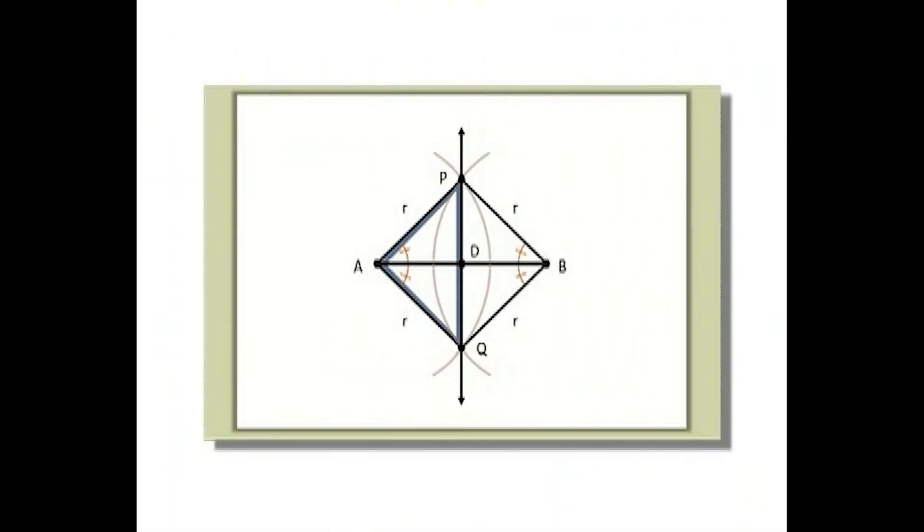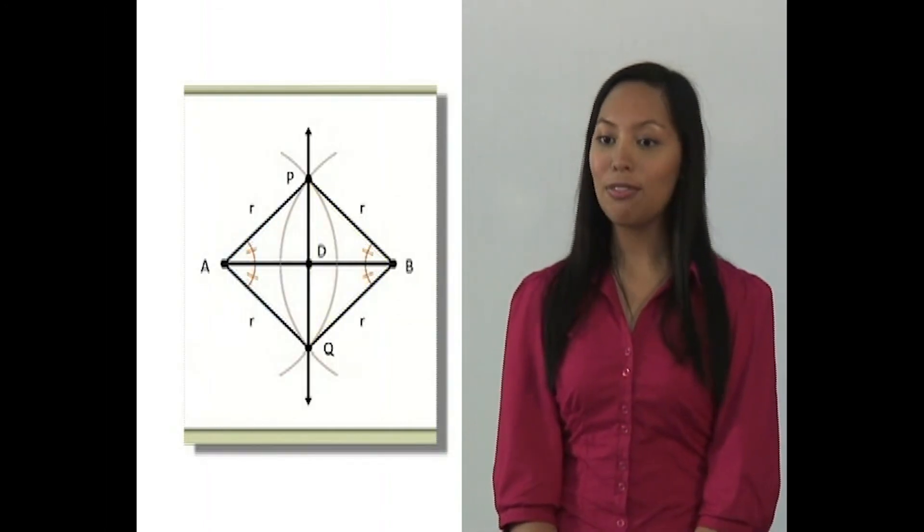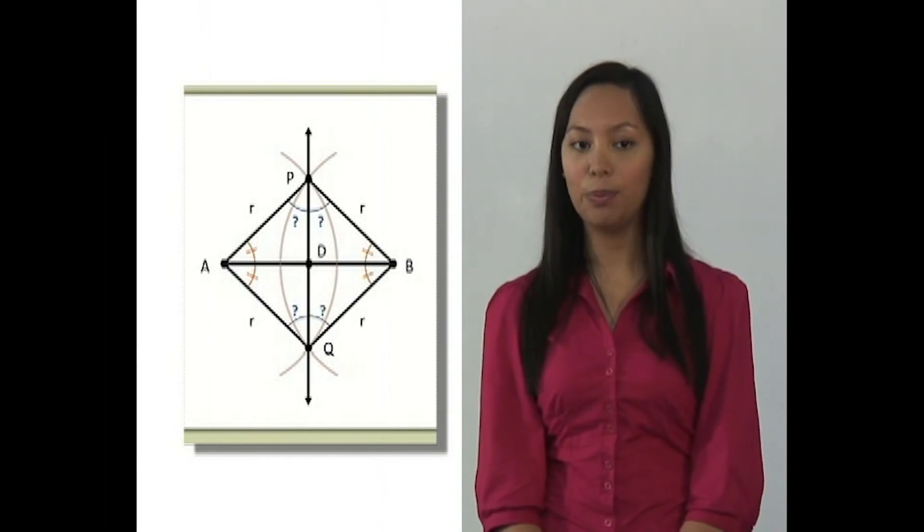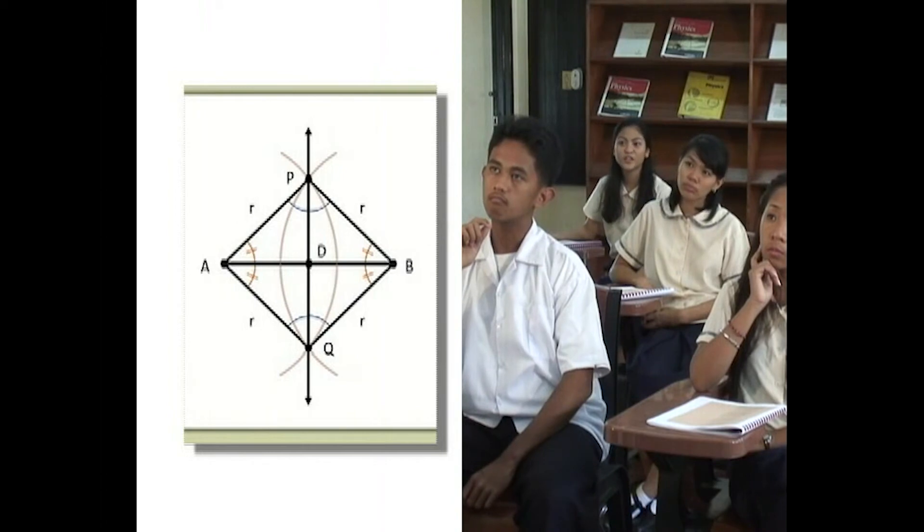Now consider triangles APQ and BPQ. Are they congruent? Yes, they are. AP is congruent to BP. AQ is congruent to BQ. And they share a common side PQ, which is congruent to itself. Therefore, by the side-side-side criteria, triangles APQ and BPQ are congruent as well. You're right, Jay. So if these two triangles are congruent, what does this say about the four angles at P and Q? They're all congruent to each other as well. Very good, Lea.